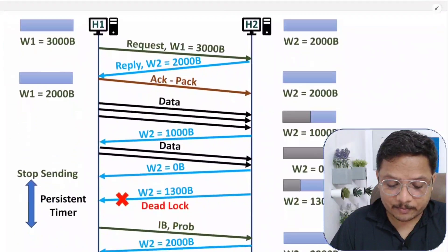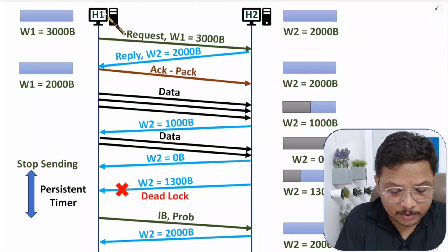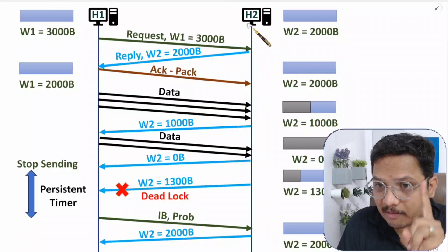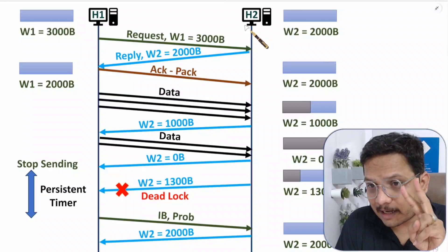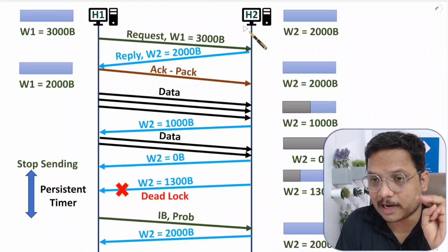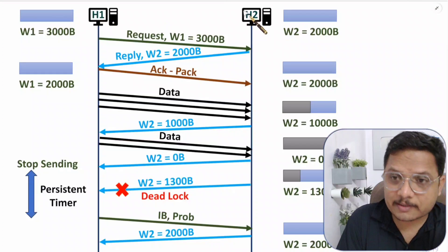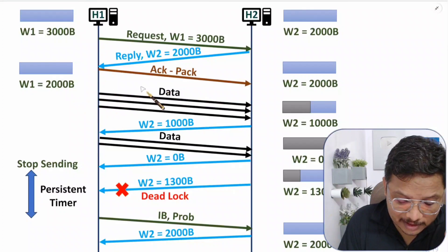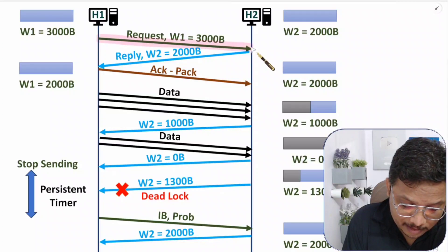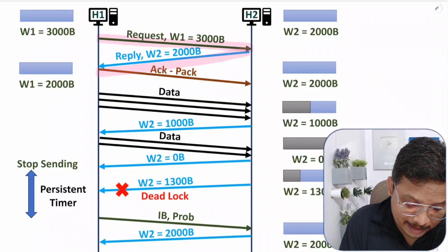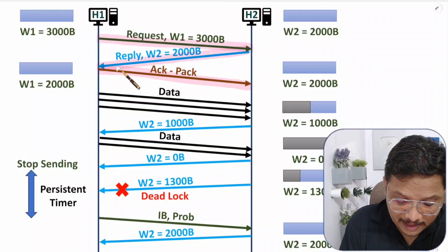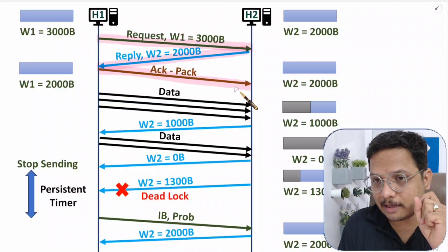Let me explain with a practical scenario. We have two computers H1 and H2. In TCP, connection establishment is the first stage, then data transfer, then connection termination. In connection establishment, both computers perform a three-way handshake — three segments are forwarded. The first segment is a request by H1, the second is a reply from H2, and then there is an acknowledgement.